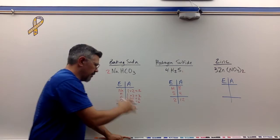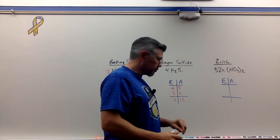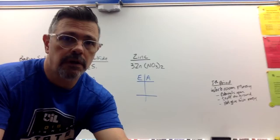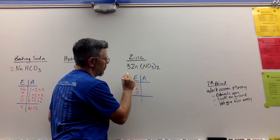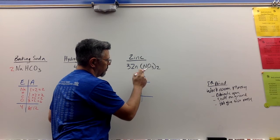Now we have zinc and I'm going to go ahead and slide it over just like so. Okay. Zinc. So elements we have Zn, we have N, and we have O.